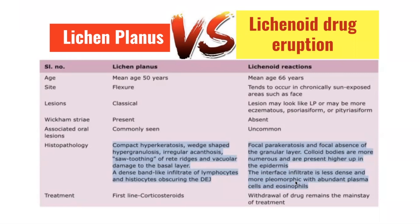Lichen planus is commonly seen in the oral cavity, whereas lichenoid reactions tend not to involve the oral cavity. Histologically, lichen planus shows compact hyperkeratosis and wedge-shaped hypergranulosis with irregular acanthosis, saw-toothing of the rete ridges, vacuolar damage to the basal layer, and a dense band of lymphocytic infiltrate at the dermal-epidermal junction. In lichenoid drug eruptions, there is focal parakeratosis and focal absence of the granular layer; colloid bodies are more numerous and present higher up in the epidermis; the interface infiltrate is less dense; and there are more abundant plasma cells and eosinophils in a deeper, more perivascular infiltrate.